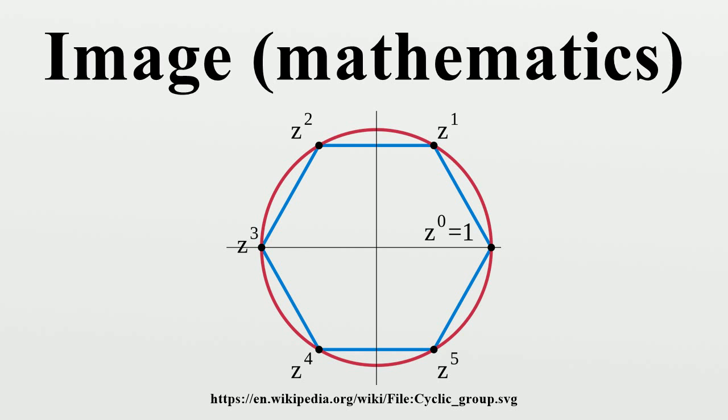Inverse image: Let f be a function from X to Y. The pre-image or inverse image of a set B ⊆ Y under f is the subset of X defined by the inverse image of a singleton, denoted by f^(-1)(y) or by f^(-1){y}, is also called the fiber over y or the level set of y. The set of all the fibers over the elements of Y is a family of sets indexed by Y.